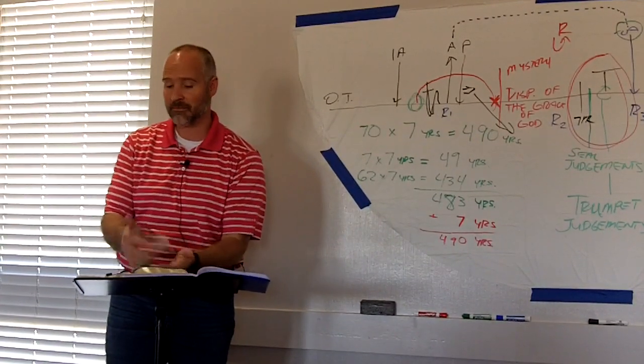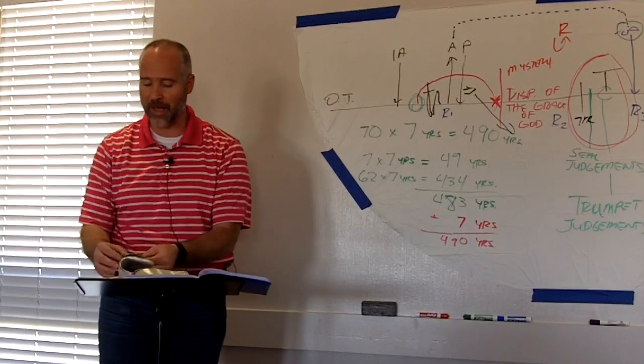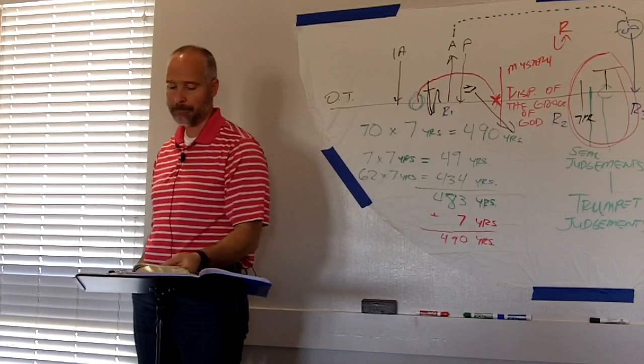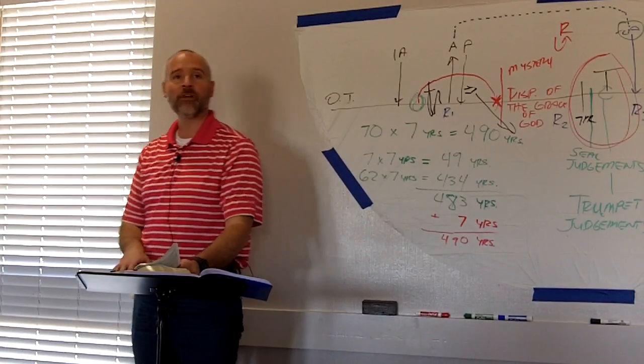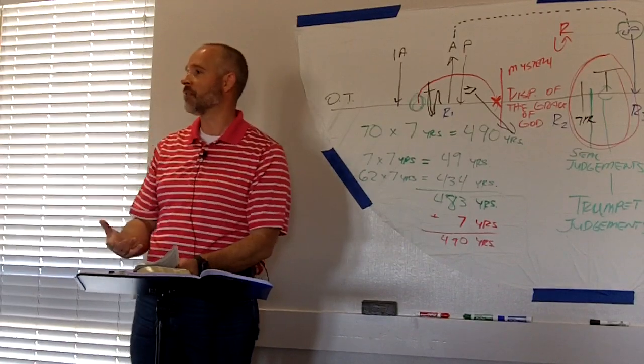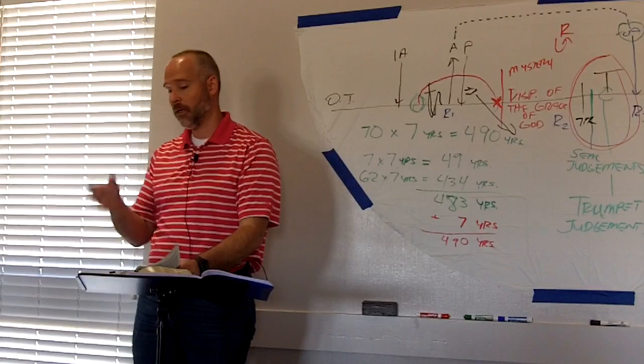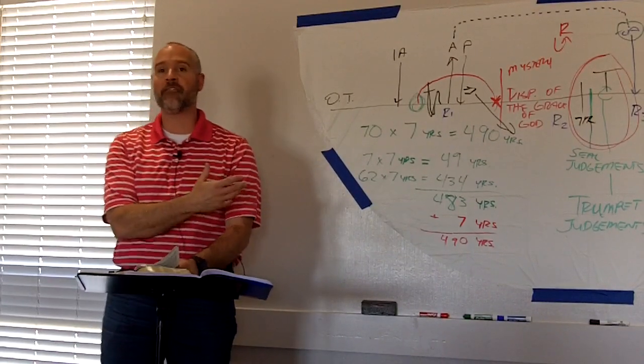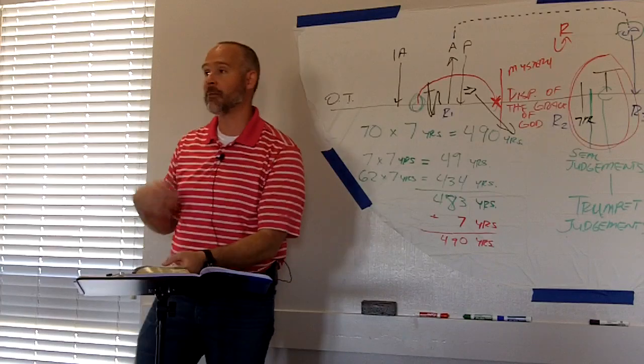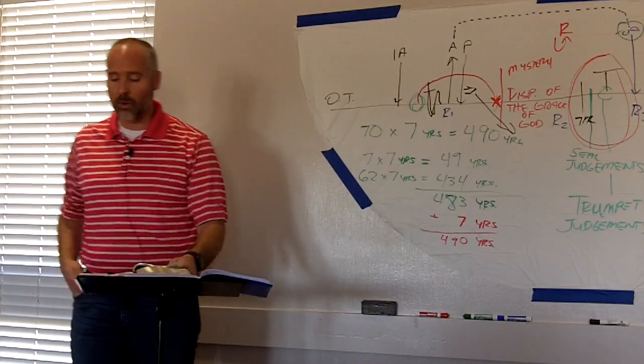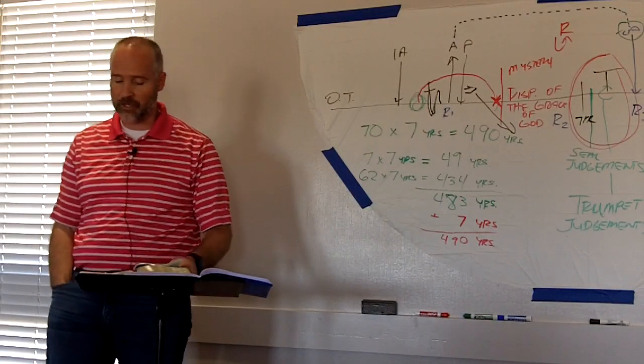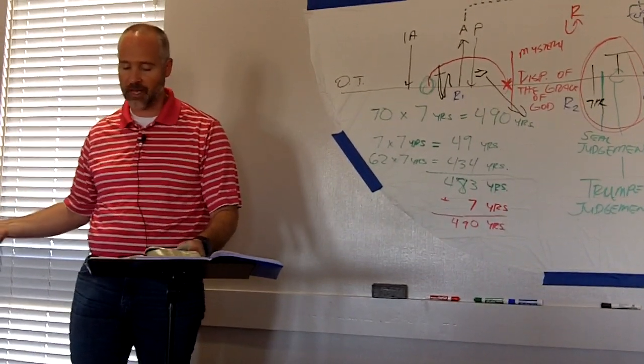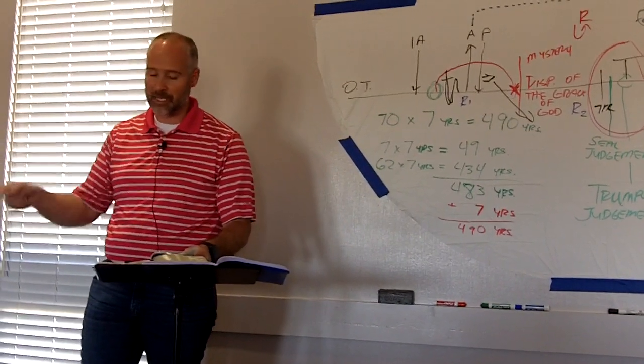Keep your marker there in Daniel 9 because we'll come back to it. But go back with me on Matthew chapter 24. Matthew chapter 24. And remember, Matthew chapter 24. This is what we call the Olivet Discourse. Jesus is literally on the Mount of Olives. He's talking to the disciples. He's explaining to them end times stuff. And up until verse 15, we've gotten a lot of first half of the story information about the tribulation. And then we come to verse 15. When ye therefore shall see the abomination of desolation spoken of by Daniel the prophet, stand in the holy place, whoso readeth, let him understand. Then let them which be in Judea flee into the mountains. Let him which is on the housetop not come down to take anything out of his house. Neither let him which is in the field return back to take his clothes.